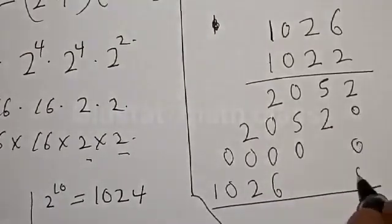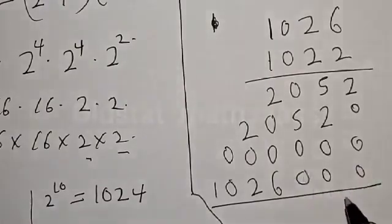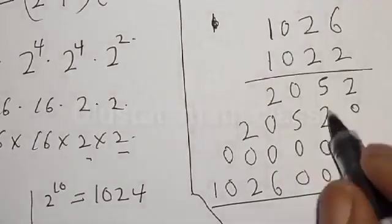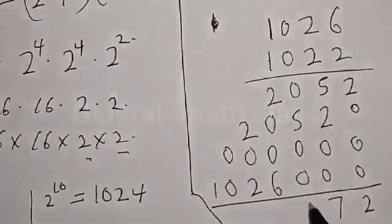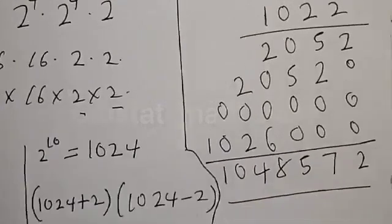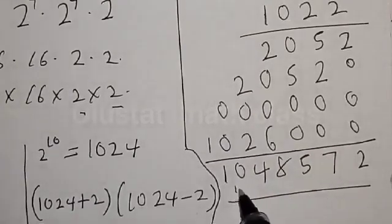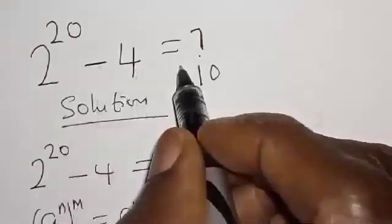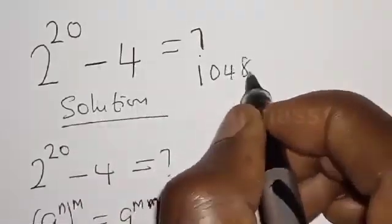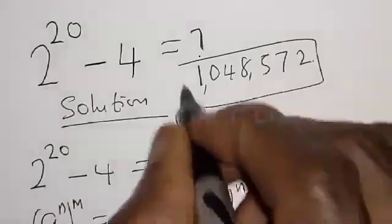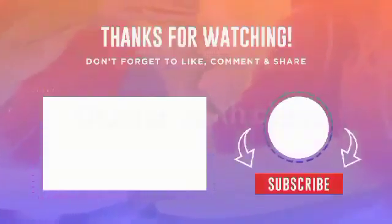Adding all partial products: 2 plus 0 is 2; 5 plus 2 is 7; 5 plus 0 is 5; 6 plus 2 is 8; 2 plus 2 is 4; 0 plus 0 is 0; and 1. Our final answer is 1,048,572. Therefore, 2 raised to power 20 minus 4 is equal to 1,048,572. If you have enjoyed the class, please don't forget to like, share, comment and subscribe. Thank you.